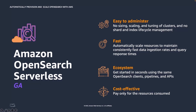OpenSearch Serverless integrates with different services within the AWS ecosystem, such as Amazon Kinesis Data Firehose for data ingestion. The APIs are accessible from AWS SDK, CLI, or the console. With Serverless, you only pay for what you use in terms of compute and storage. OpenSearch Serverless is now generally available across eight AWS regions globally. Currently, Serverless collections run OpenSearch version 2.0.x, and as new versions are released, OpenSearch Serverless will automatically upgrade your collections to consume new features.